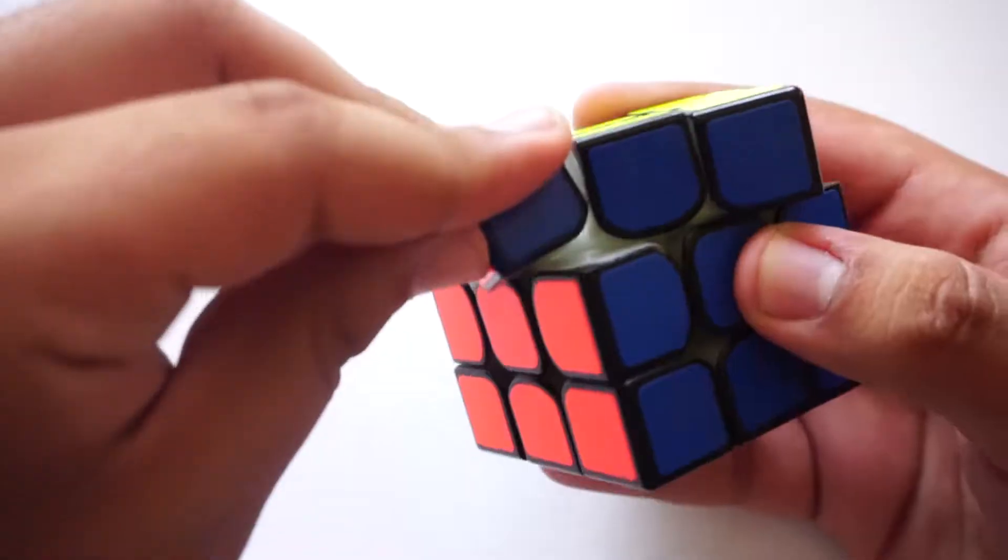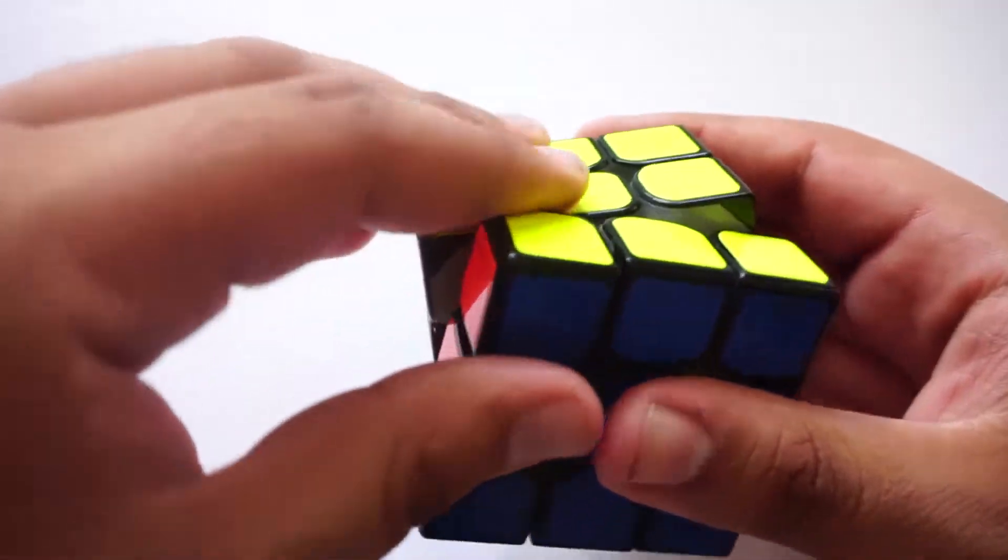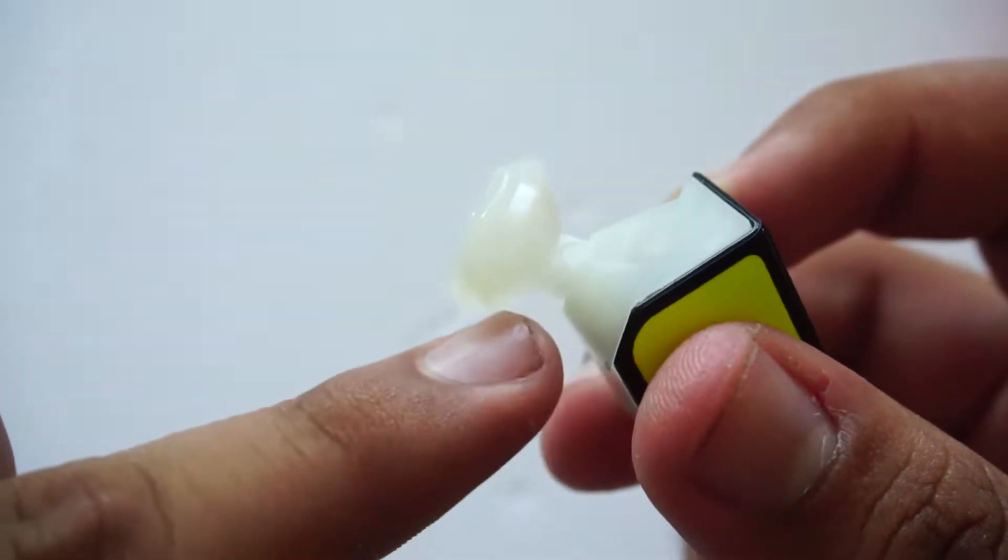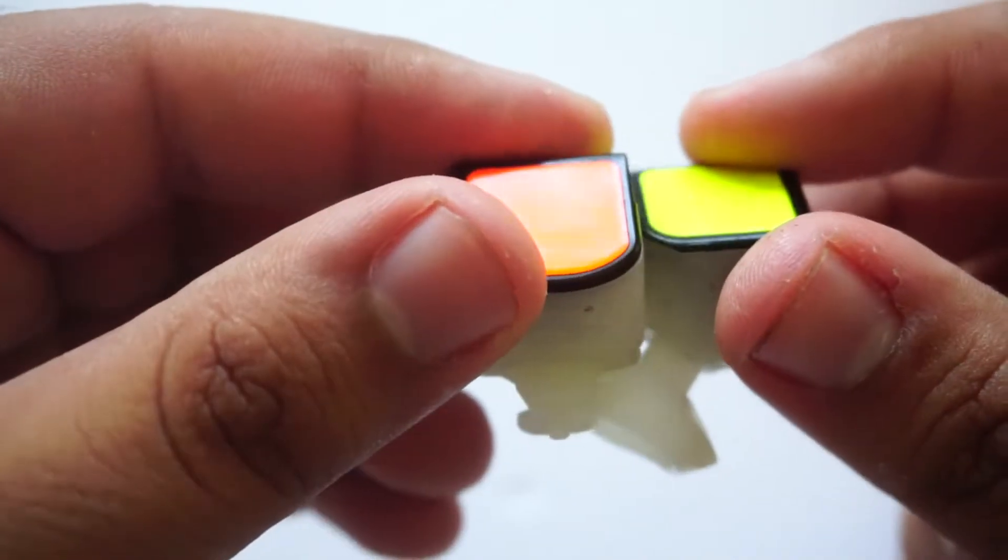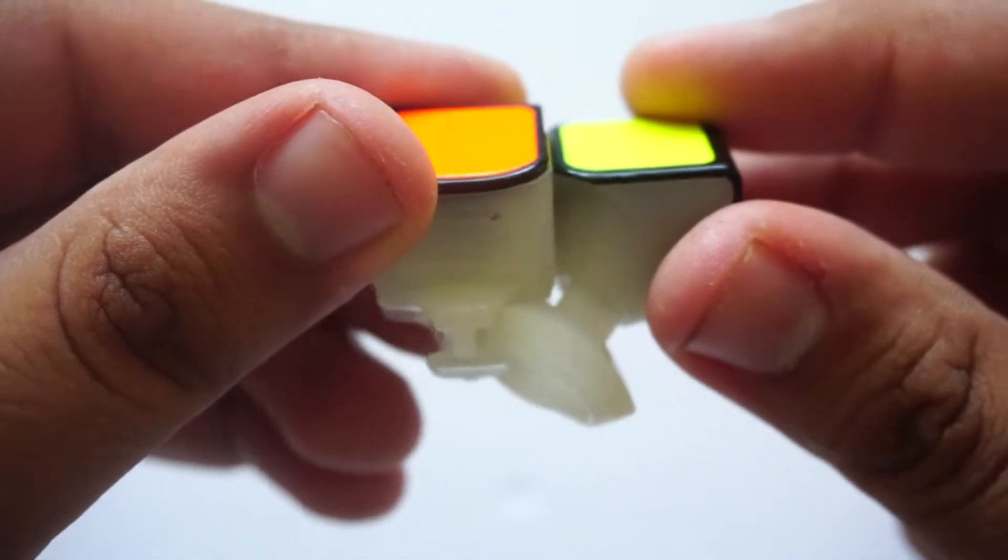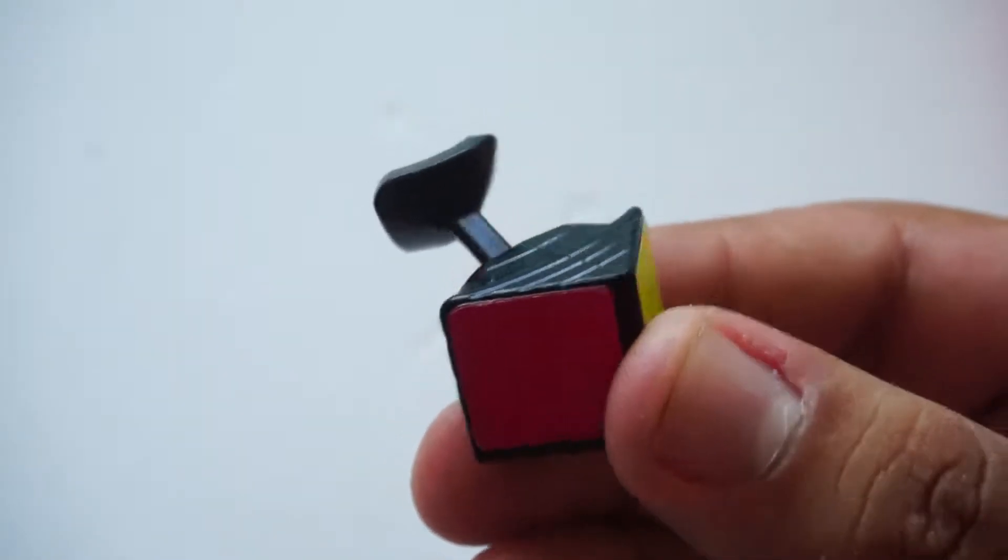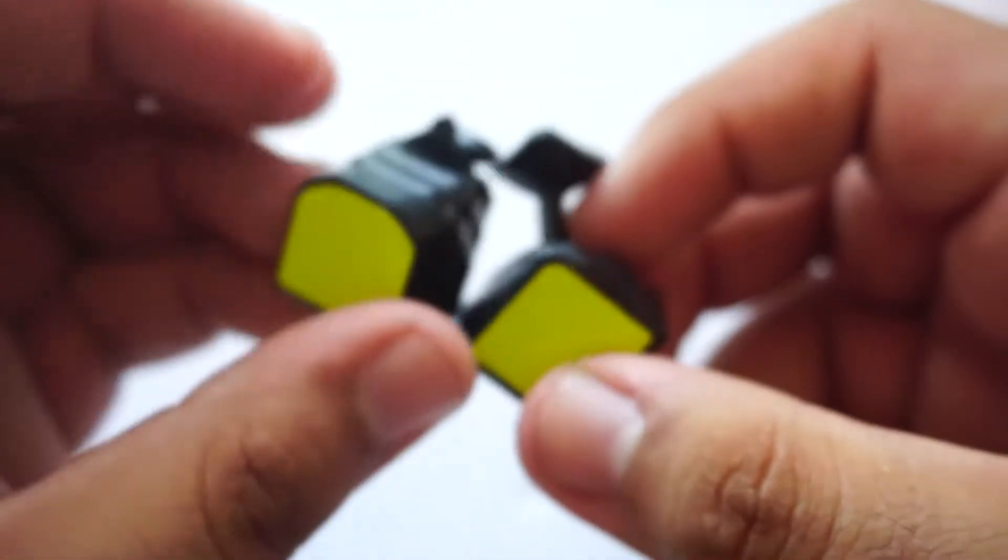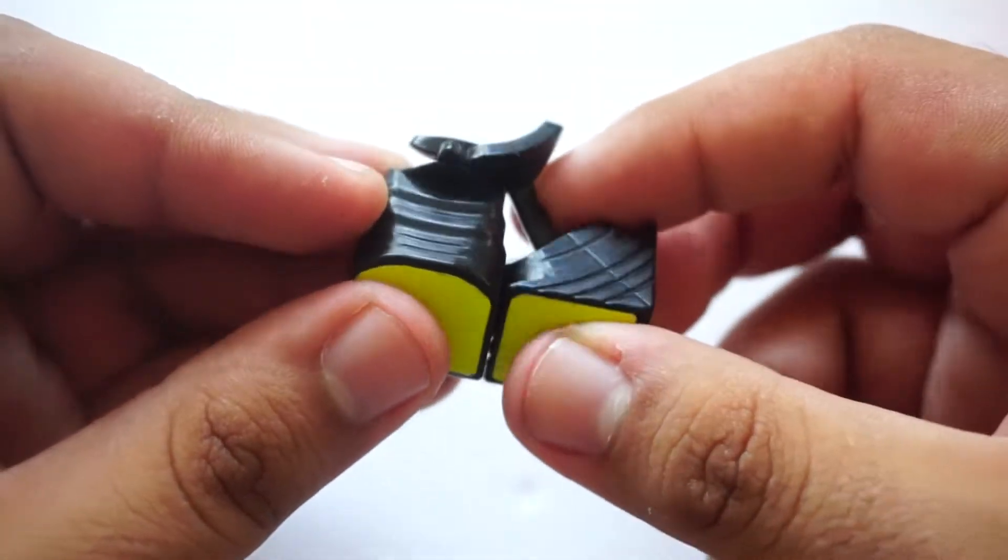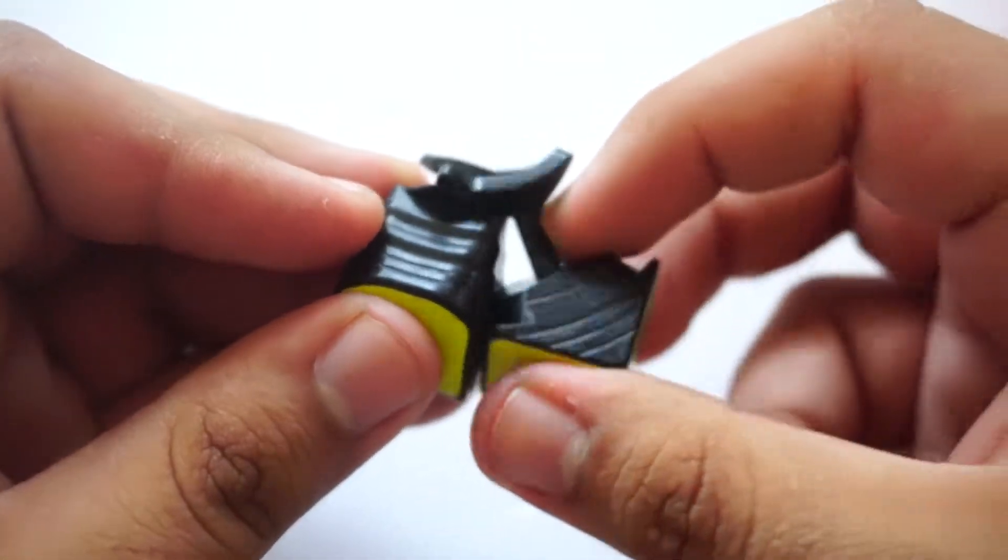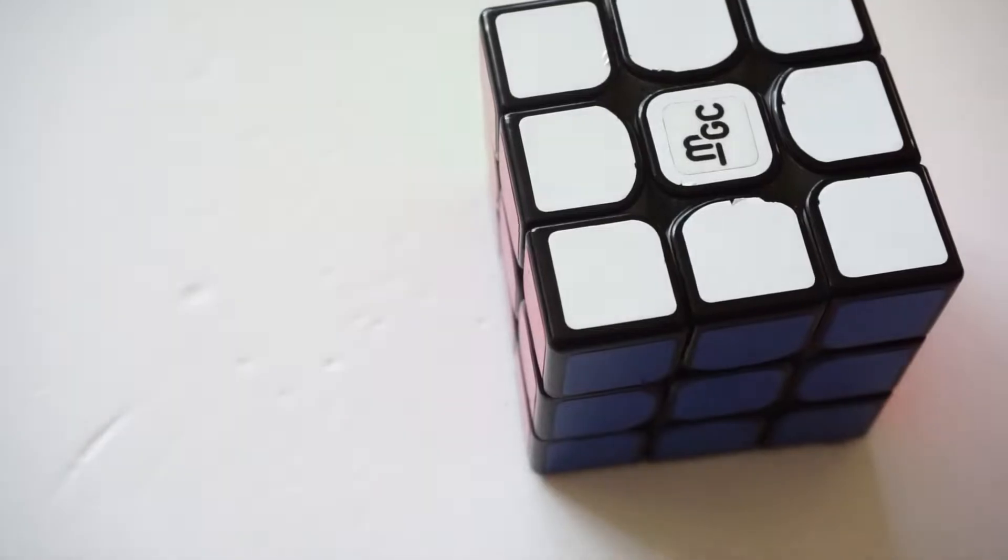Surprisingly, the MGC has better anti-corner twisting than the Yuxin Little Magic, and this is because of the designs of the pieces. The MGC has a thick corner stalk which hits nicely against the edge and doesn't allow for any space for any sort of movement which makes it more difficult to get a corner twist. However, the Little Magic has a longer and skinnier stalk on the corner and makes it easier to have more corner twists. While I had no corner twists on either of these cubes, the winner for this category goes to the MGC for its unique design and bringing back a corner type that isn't really used anymore.